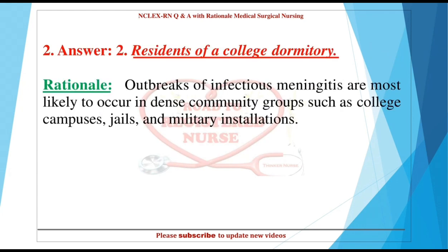Answer: 2. Residents of a college dormitory. Rationale: Outbreaks of infectious meningitis are most likely to occur in dense community groups such as college campuses, jails, and military installations.